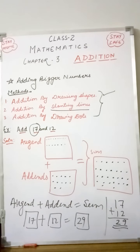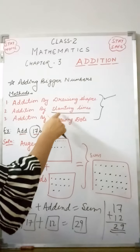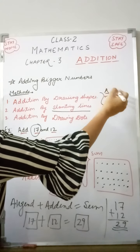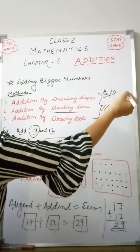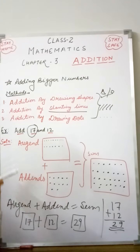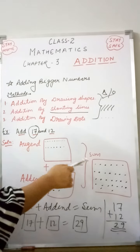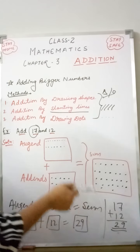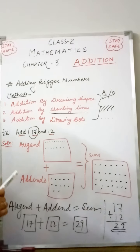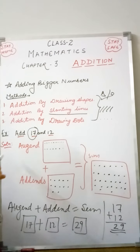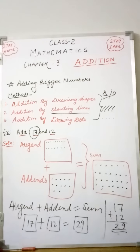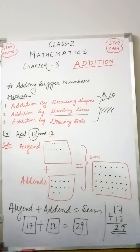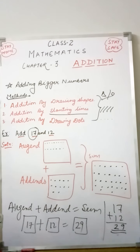In all three methods — drawing shapes, slanting lines, and drawing dots — the sum is the same. You can choose any shape: triangle, circle, or anything of your choice. You just need to represent the Augend, Addend, and Sum in every question. I hope you understand all three methods of adding bigger numbers. Thank you, students — that's all for today's session.